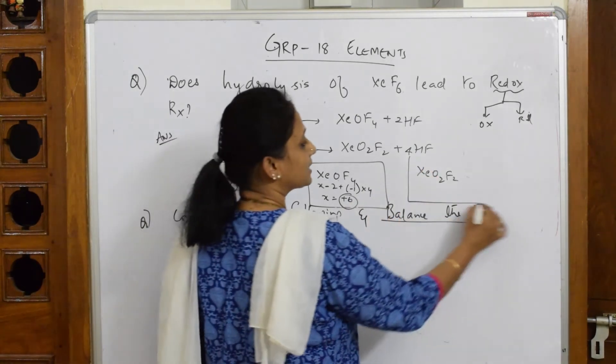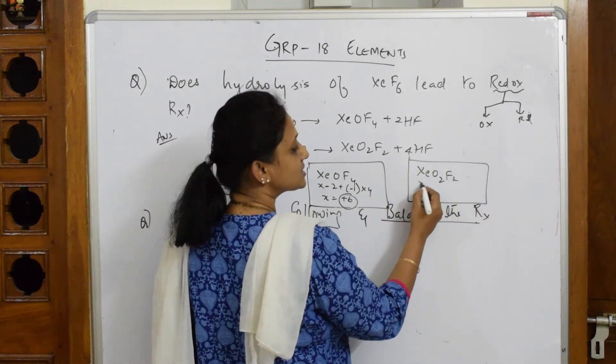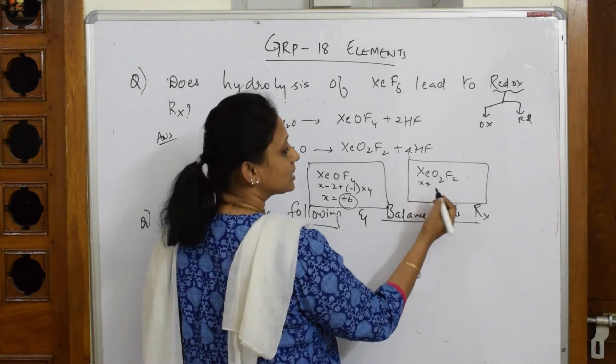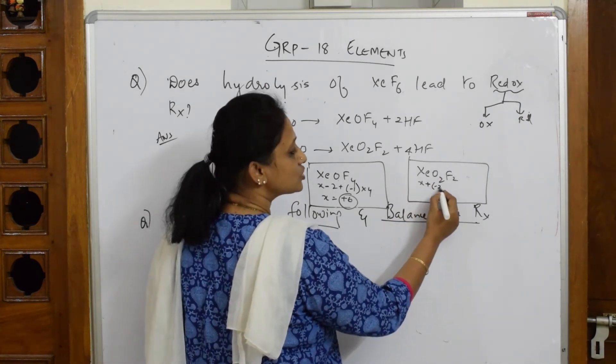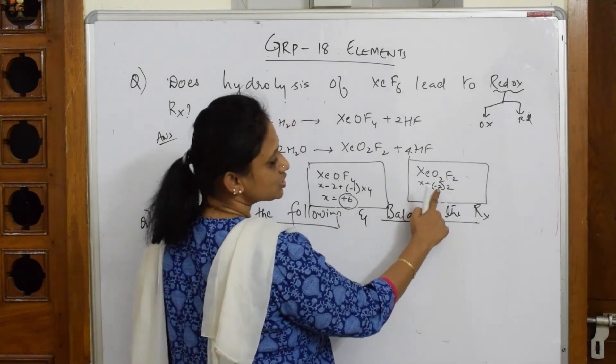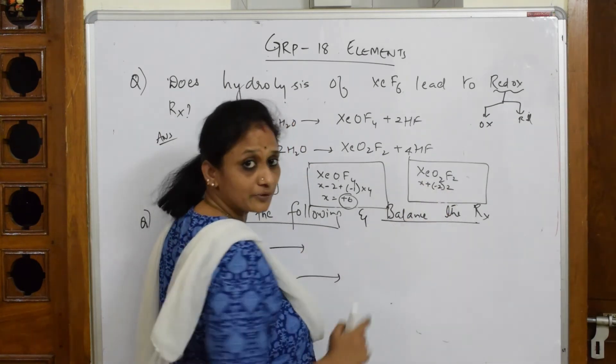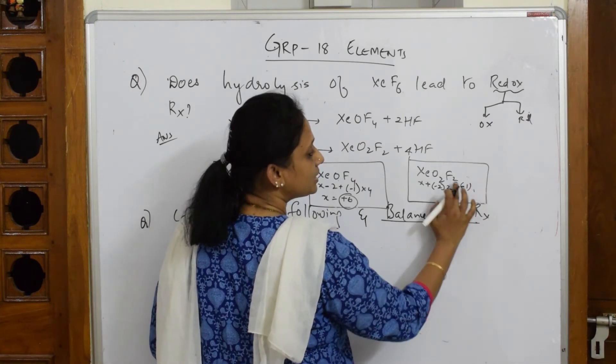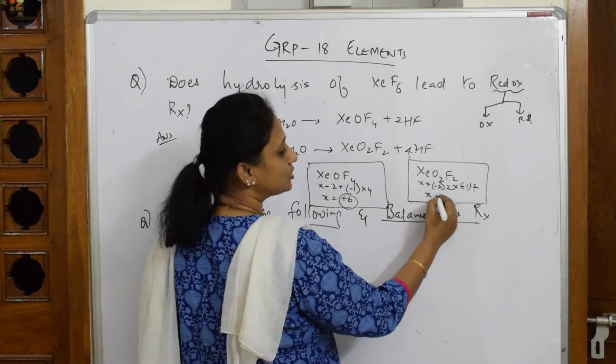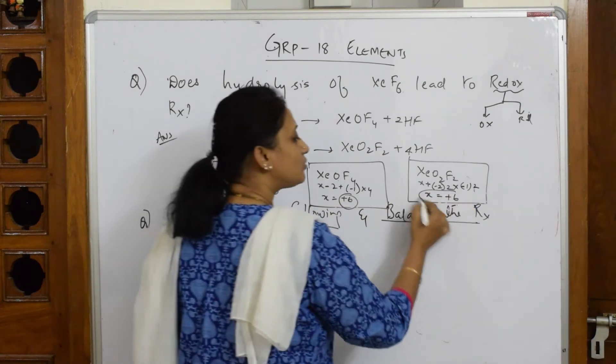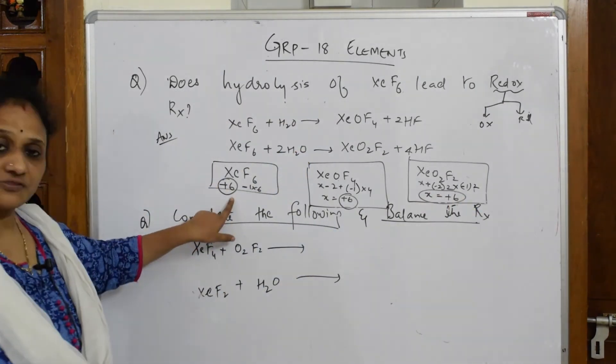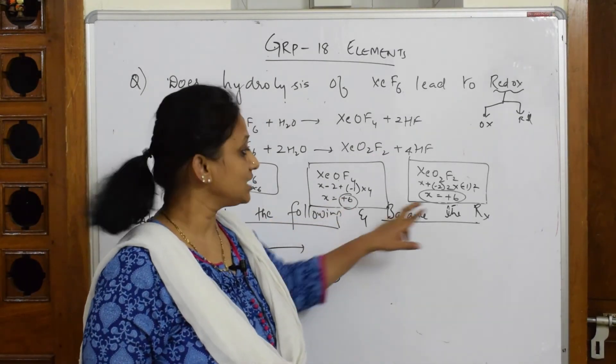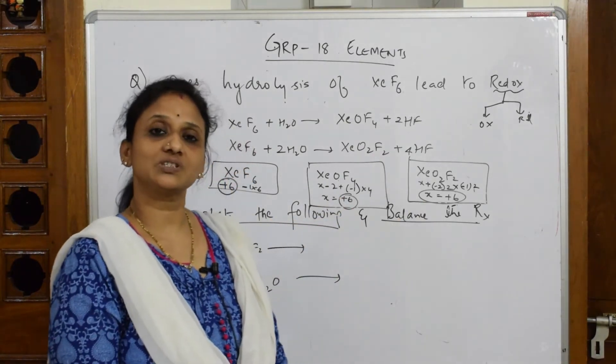Now let me compare and see. Here xenon is X. Oxygen, let us start with the valency: minus 2 into 2, minus 1 is the valency of fluorine and 2 are there. So total X is equal to plus 6. So everywhere what are you observing? In XeF6 oxidation state is plus 6, this also plus 6, this oxidation state is plus 6.